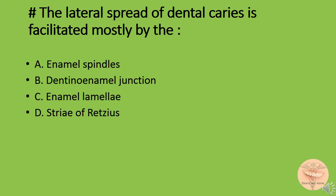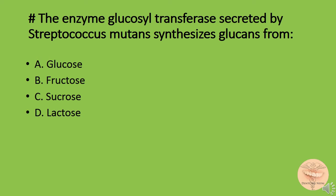The lateral spread of dental caries is facilitated mostly by: option A) enamel spindles, option B) dentino-enamel junction, option C) enamel lamella, or option D) striae of Retzius. The correct answer is option B: dentino-enamel junction. The enzyme glucosyl transferase secreted by Streptococcus mutans synthesizes glucans from: option A) glucose, B) fructose, C) sucrose, or D) lactose. The correct answer is option C: sucrose.